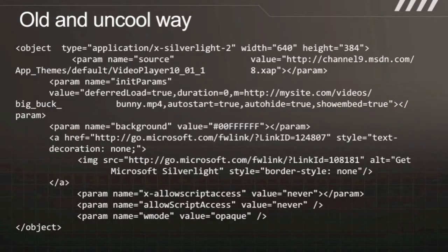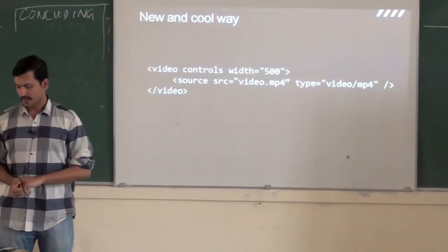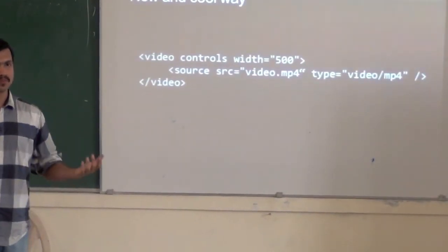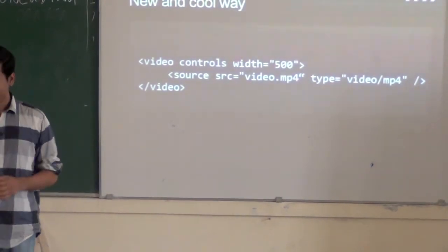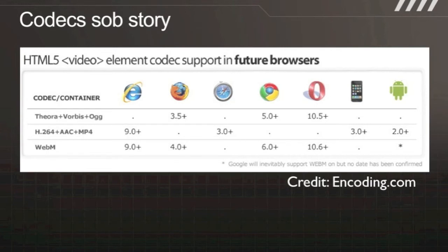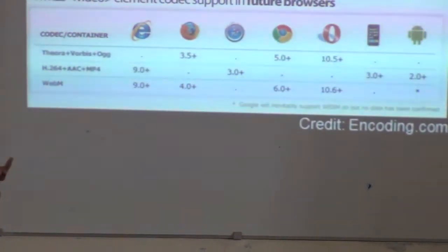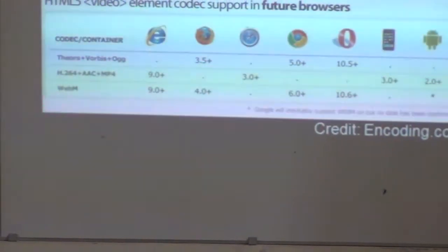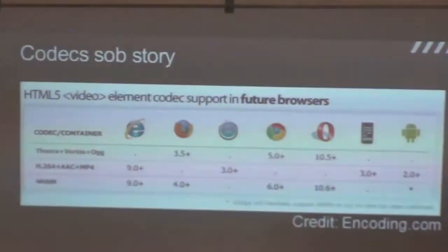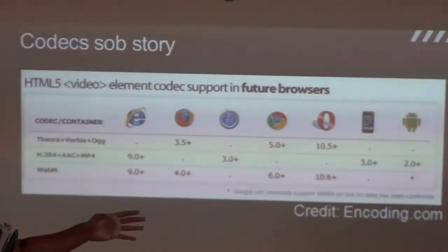This is how we used to do video before — and that's what it looks like with HTML5. Much less code. Now, that sounds too good to be true — and it turns out it is too good to be true. The sad story is the codec story. It turns out there are different codecs. Video is always compressed — a 5-minute video will probably be 500 megs uncompressed, so everything gets compressed. There are different standards for compression.